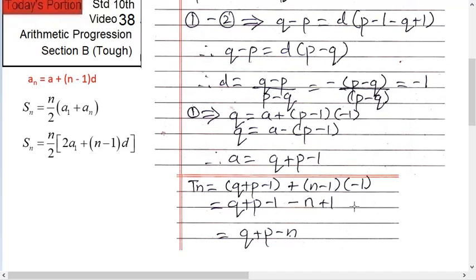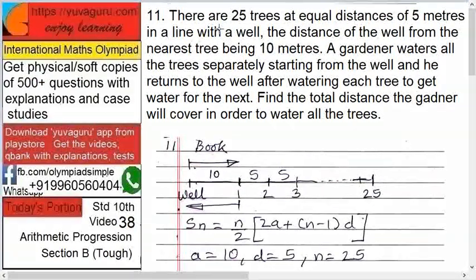Plus n minus 1 into minus 1. Solve this now. You will get q plus p minus n. Next, this one is a tougher one.